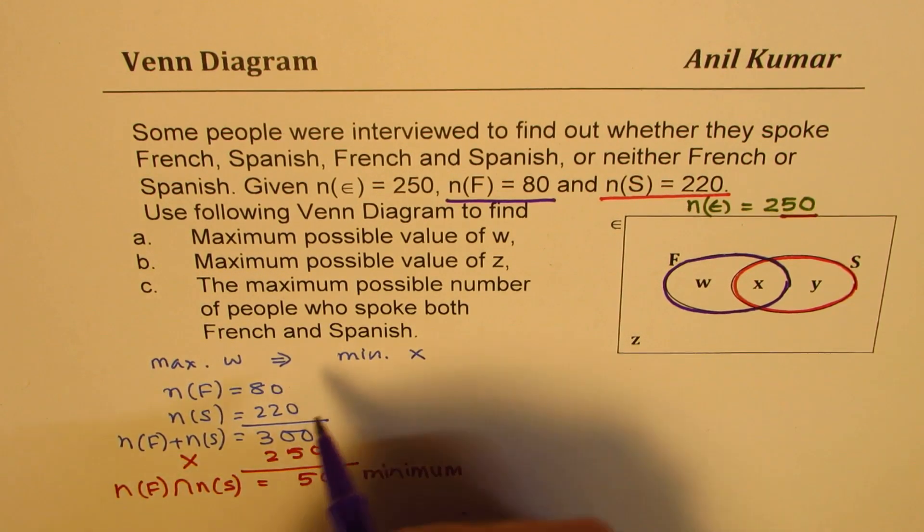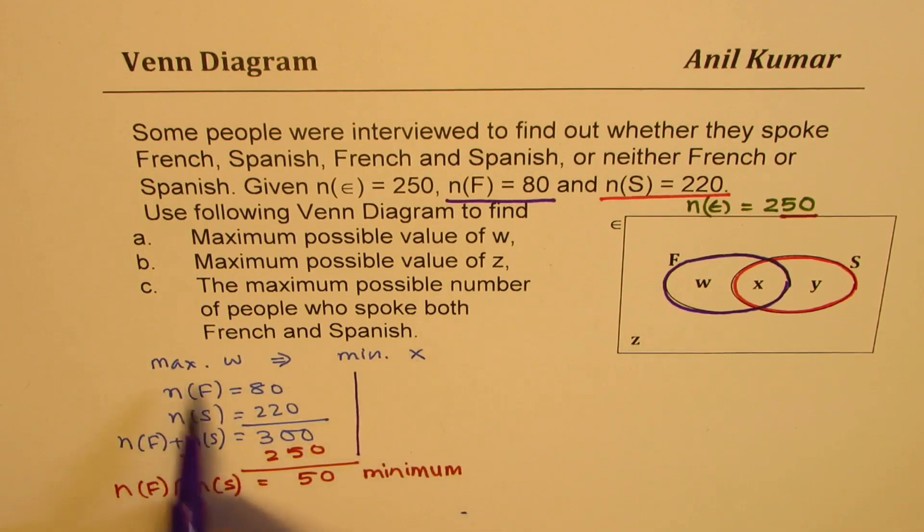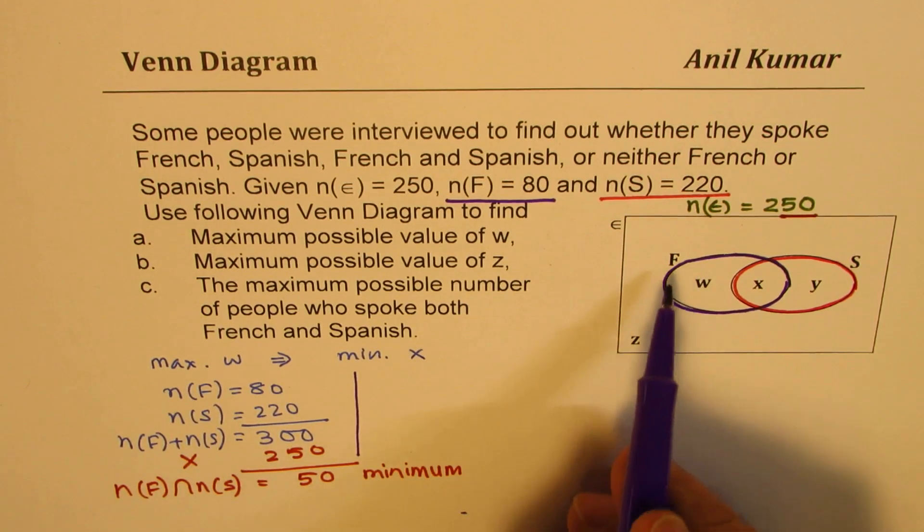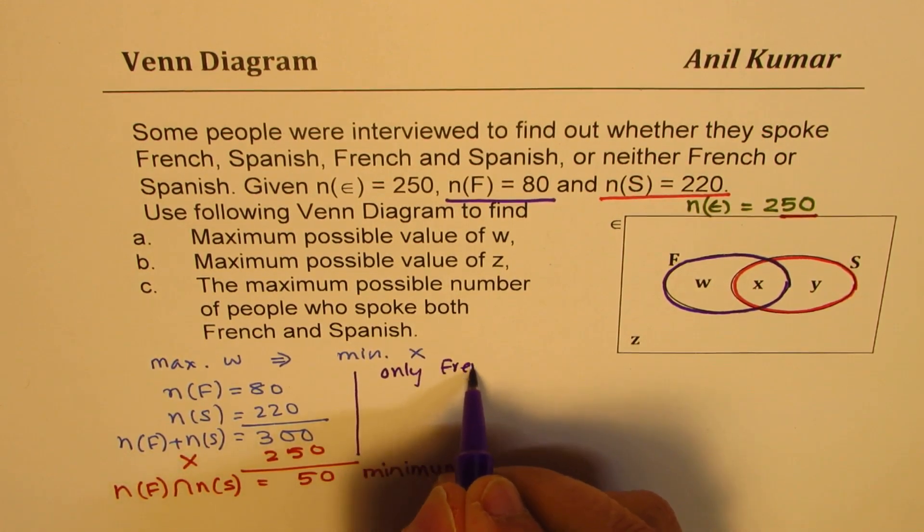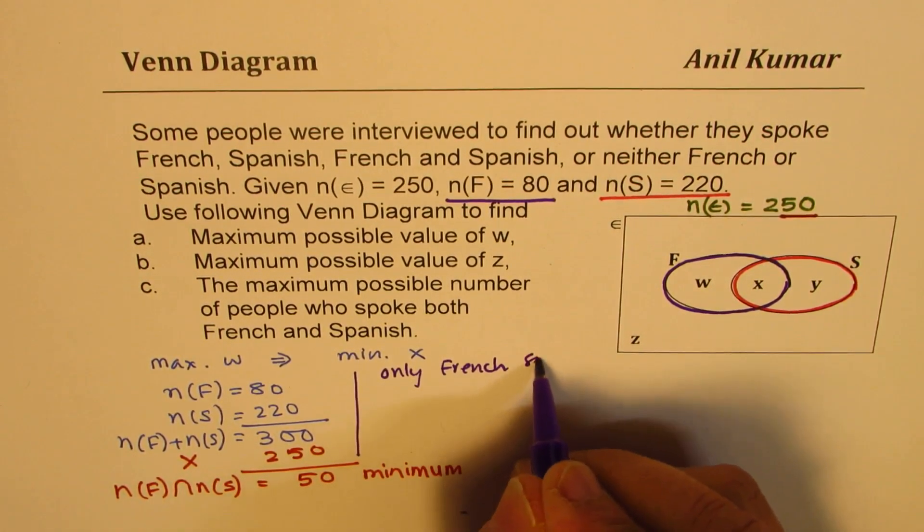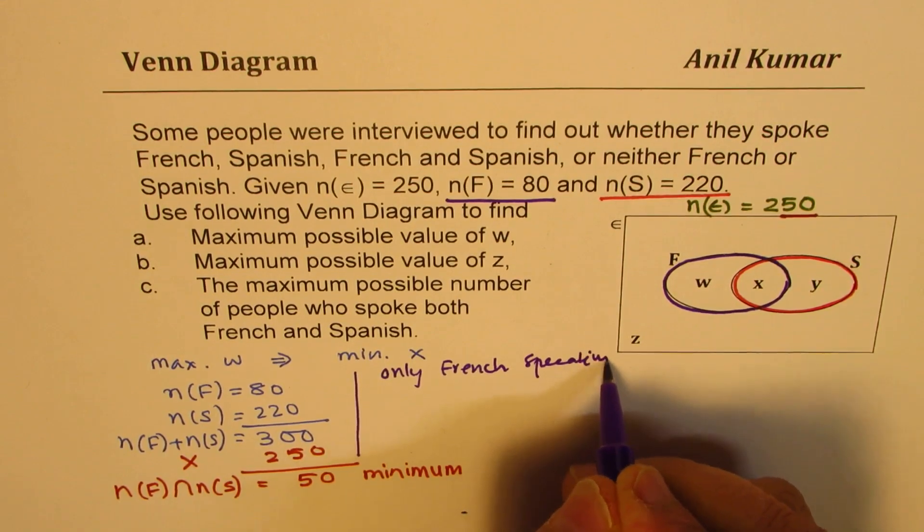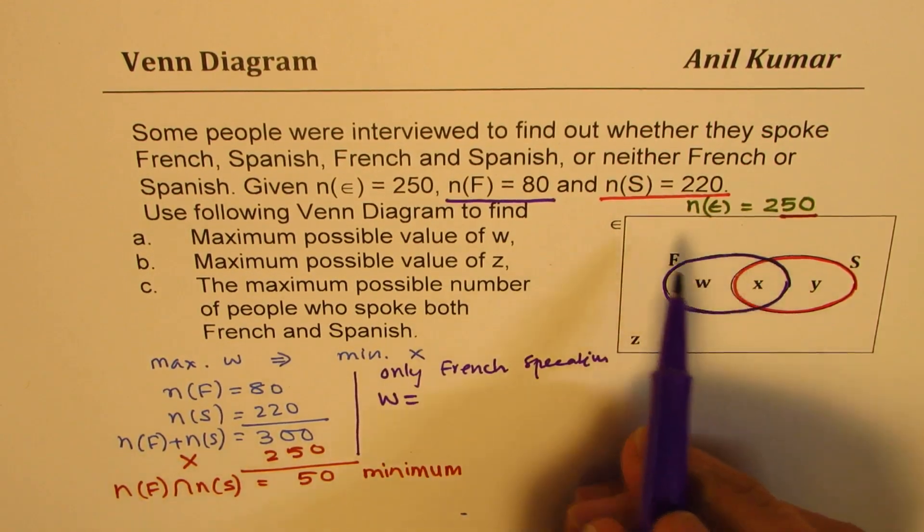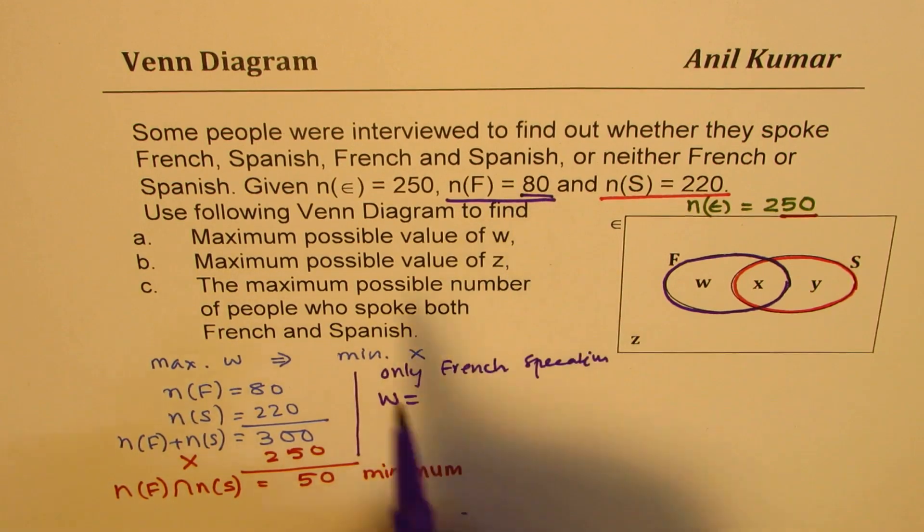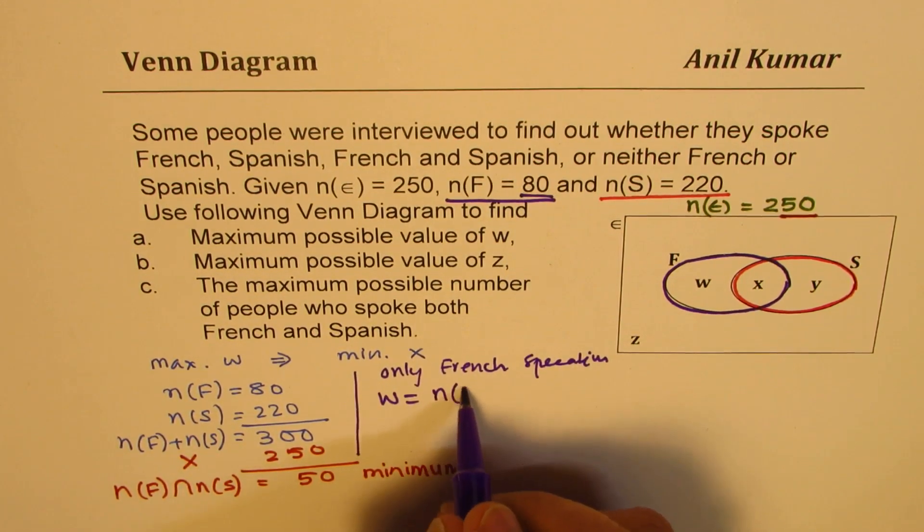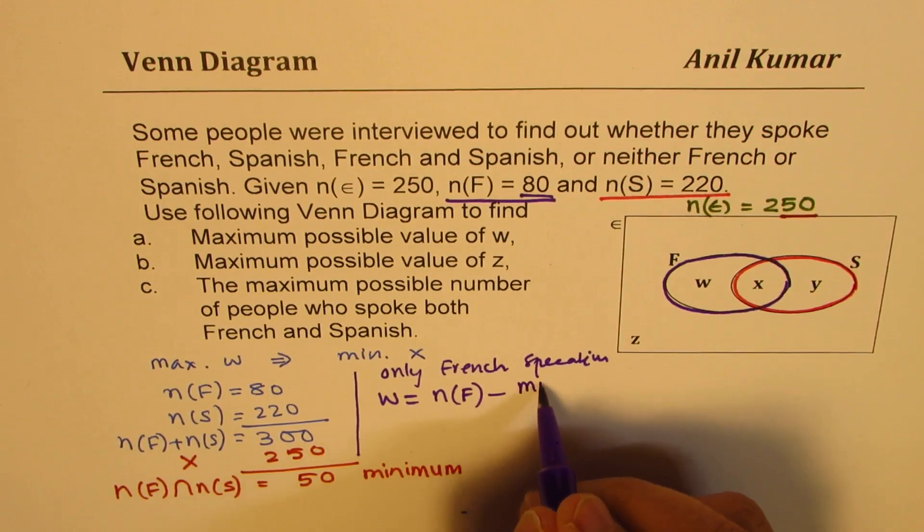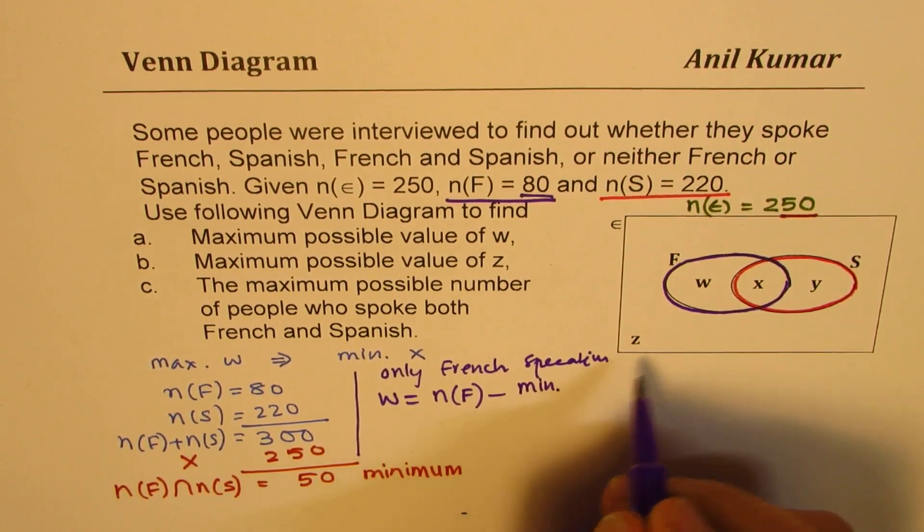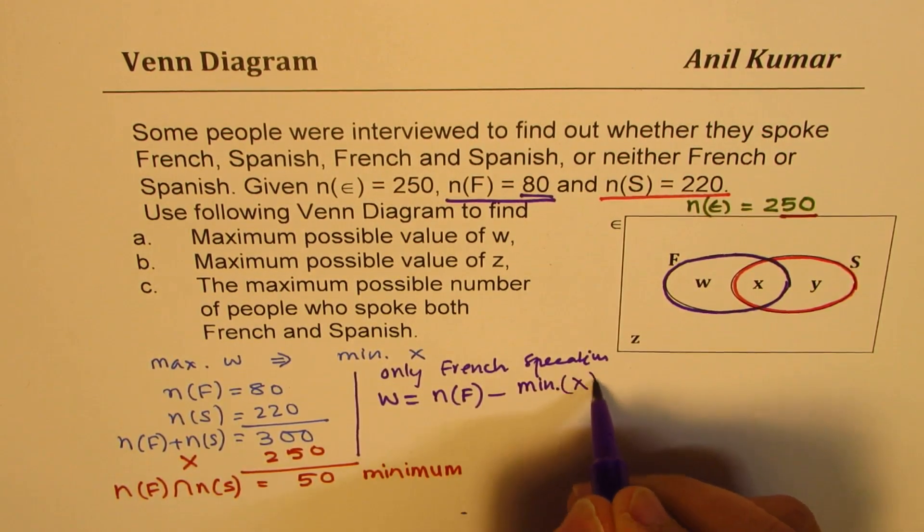Now, as we found our logic for maximum W, that means only French. So only French speaking, which is W, should be how much from the total French speaking, which is 80? Let me write N(F) minus what is minimum value of X. Minimum value of X, correct.